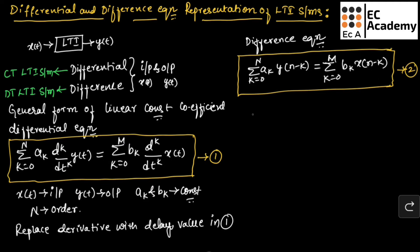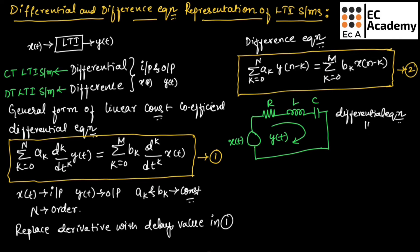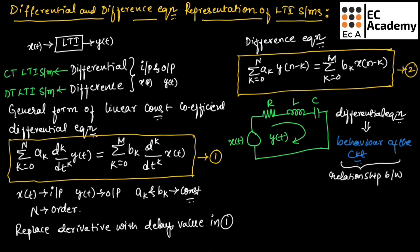Let us take an example to understand this. Let us consider an electrical circuit with a resistor, inductor, and capacitor, with input x(t) and output y(t). If we write the differential equation of this electrical circuit, this differential equation will describe the behavior of the circuit — that is, the relationship between input and output. Here the input x(t) is voltage and the output y(t) is current.